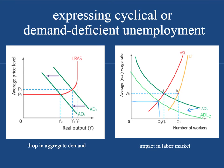Now let's look at expressing cyclical or demand-deficient unemployment. Over here we have the regular aggregate demand and supply of labor curve — the labor market. And over here you have a Keynesian view with the long-run aggregate supply curve. In the beginning this is aggregate demand — you're going to have aggregate demand shift inward, which means there's a deficiency in demand in the marketplace, also called cyclical unemployment.